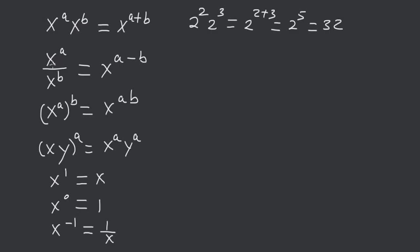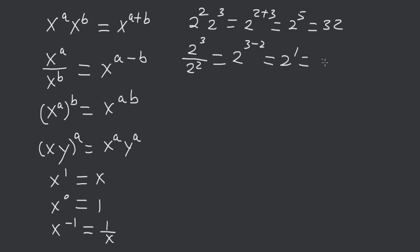You have x to the a divided by x to the b is equal to x to the a minus b. So if you have 2 cubed divided by 2 squared, this is equal to 2 to the 3 minus 2, which is equal to 2 to the 1, which is equal to 2.